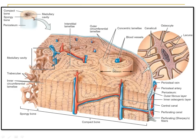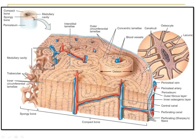So we have studied two different types of laminae: the circumferential lamina, which is of two types — outer and inner circumferential lamina — and the interstitial lamina. Now, the Haversian system consists of a canal in its center known as the Haversian canal, which contains blood vessels. This canal is externally surrounded by different laminae arranged in a concentric manner, known as the concentric laminae — the third type of lamina present in the bone — present in a spiral concentric fashion around the Haversian canal.